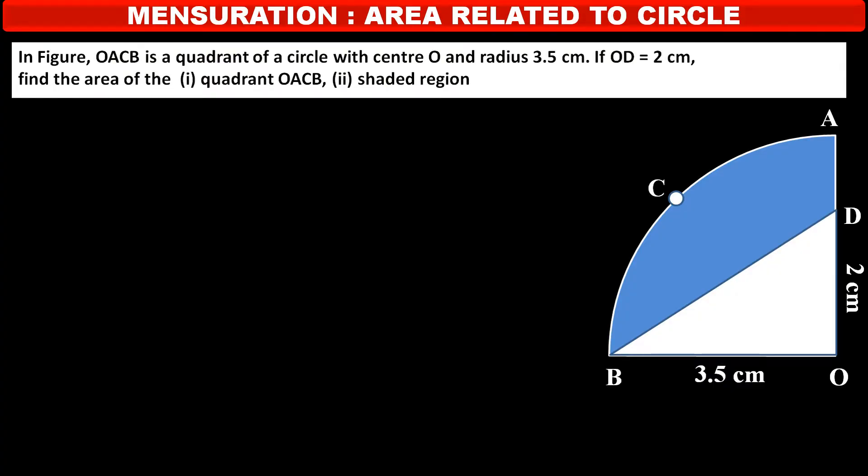In figure, OACB is a quadrant of a circle with center O and radius 3.5 cm. If OD is equal to 2 cm, find the area of the quadrant OACB and the shaded region.